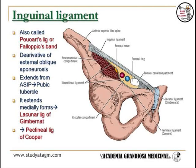The inguinal ligament, also called Poupart's ligament or Fallopius's band, is a derivative of the external oblique aponeurosis, which extends from the anterior superior iliac spine to the pubic tubercle. It extends further medially to form the lacunar ligament of Gimbernat, then extends further posteriorly on the pectineal line and continues with the periosteum, which is called the pectineal ligament of Cooper. The medial border of the iliac fascia is connected with the iliopectineal eminence and is called the iliopectineal arch or ligament.